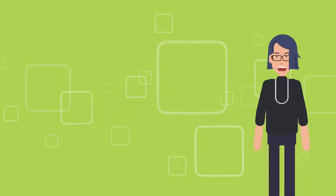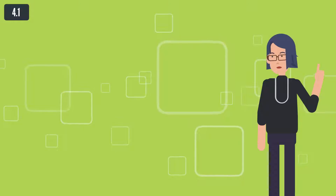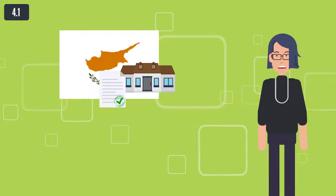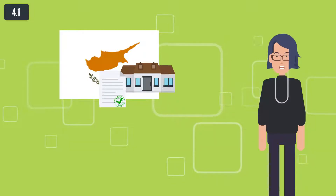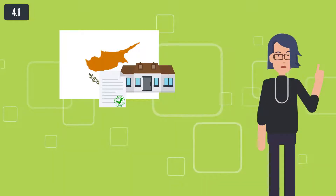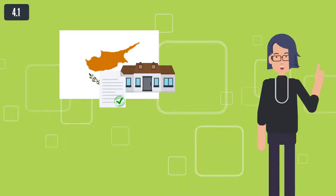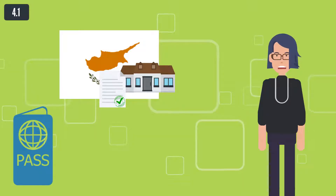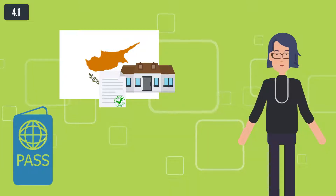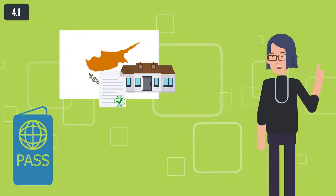C. Permanent residence of union citizens and their family members — permanent residence card. The application for the issue of a permanent residence certificate is submitted by a union citizen and family members who are also citizens of a member state, after a five-year period of uninterrupted legal residence in the Republic of Cyprus. The application for a permanent residence card is submitted by a union citizen and family members who are not citizens of a member state within one month after the expiration of validity of the residence card.